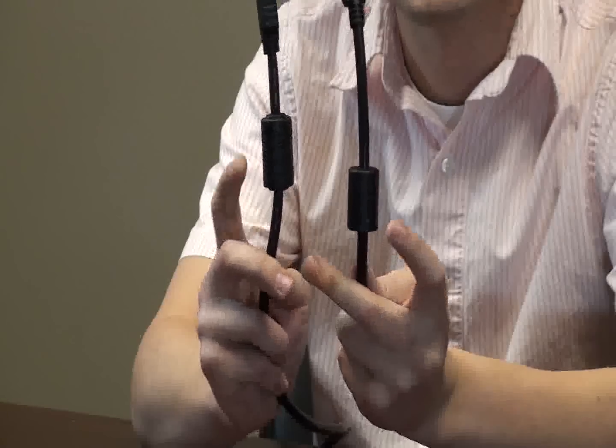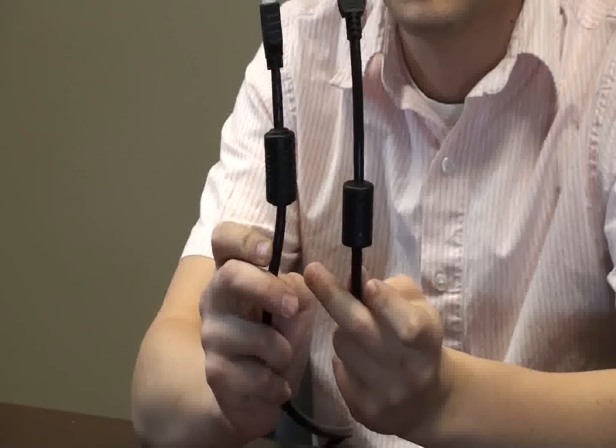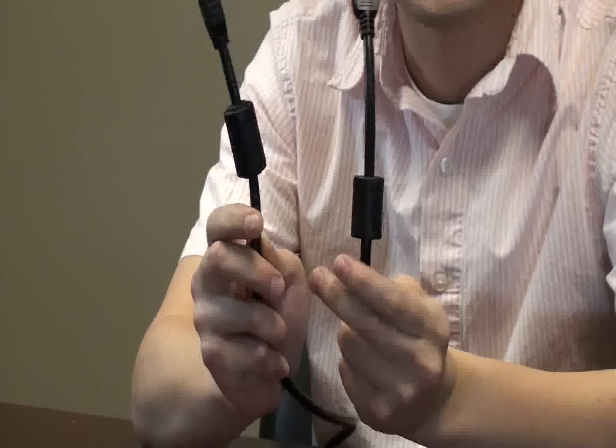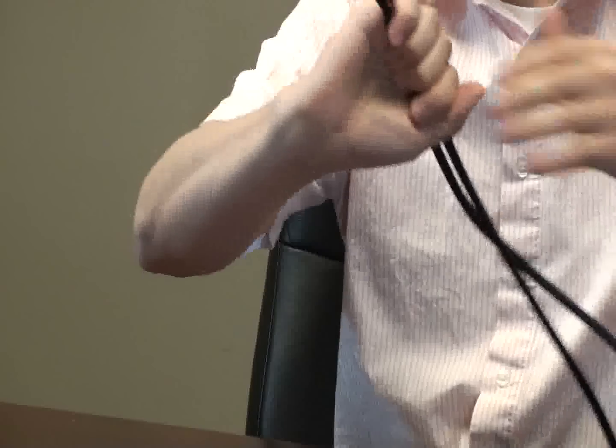They also both have ferrites, which are these little round things, which supposedly block electromagnetic interference. And so they look about the same, but if you cut them open, they look pretty different, which we went ahead and did.